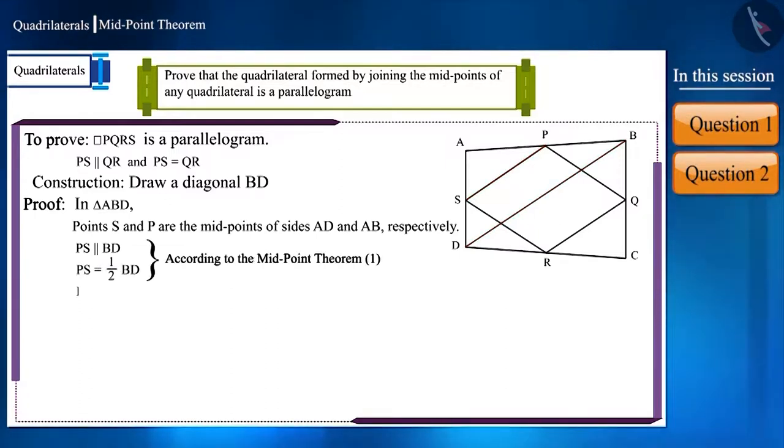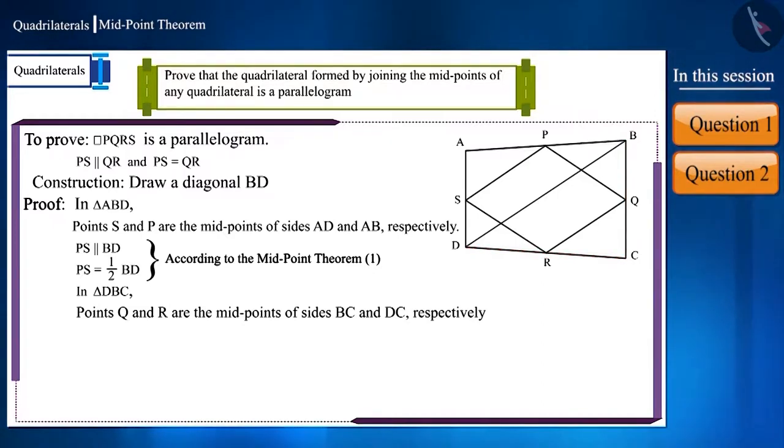Similarly, in triangle DBC, point Q and point R are the midpoints of sides BC and DC respectively. Therefore, using the midpoint theorem, we can say that sides QR and BD will be parallel and side QR will be half of side BD.